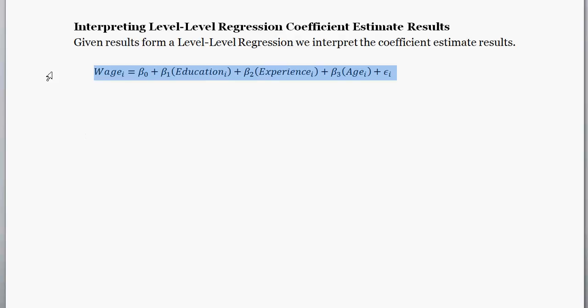Suppose we have the following model and we wish to interpret the results. So we're saying that wage here is our dependent variable, and we're going to have education, experience, and age as our independent variables, our explanatory variables.